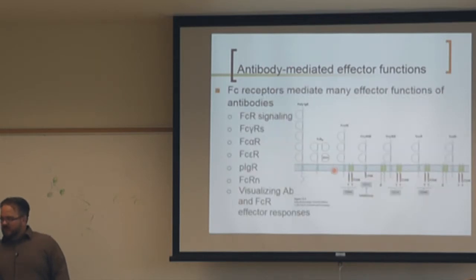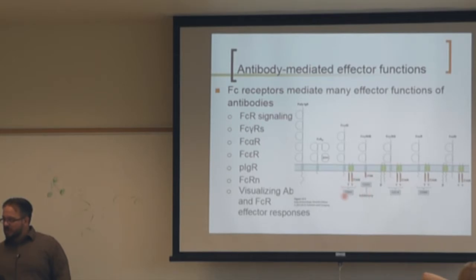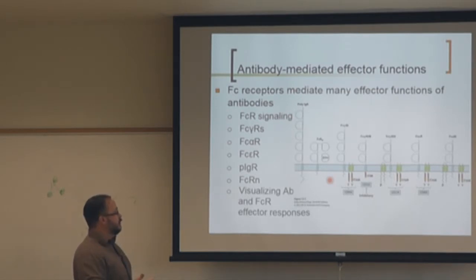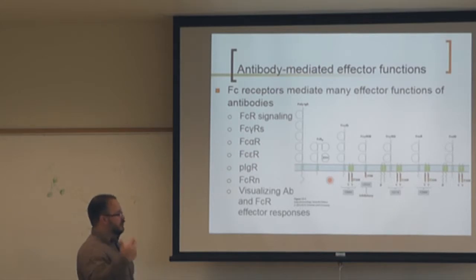Different FC receptors have different functions. Most signal through ITAMs, but Fc gamma receptor 2 has inhibitory function through ITIMs — it dephosphorylates and turns off signaling. It is lower affinity and works in conjunction with activating receptors, similar to how T cells upregulate negative co-stimulatory molecules after activation.